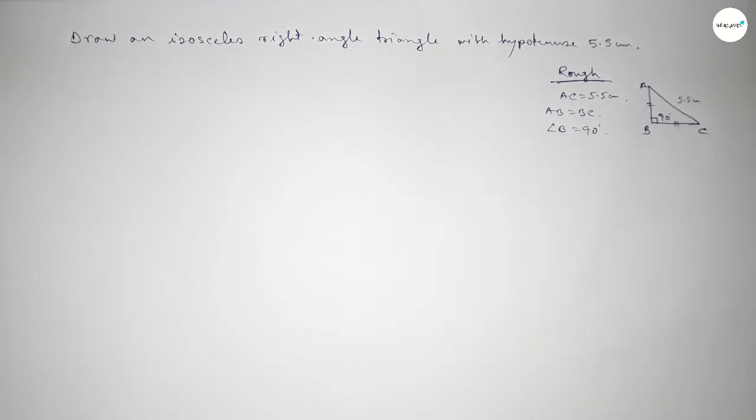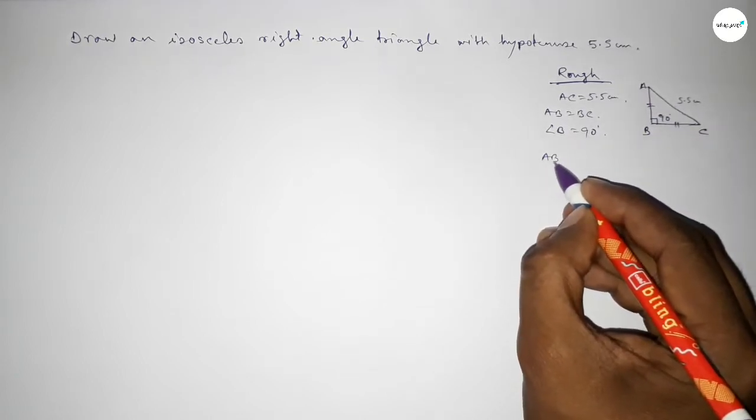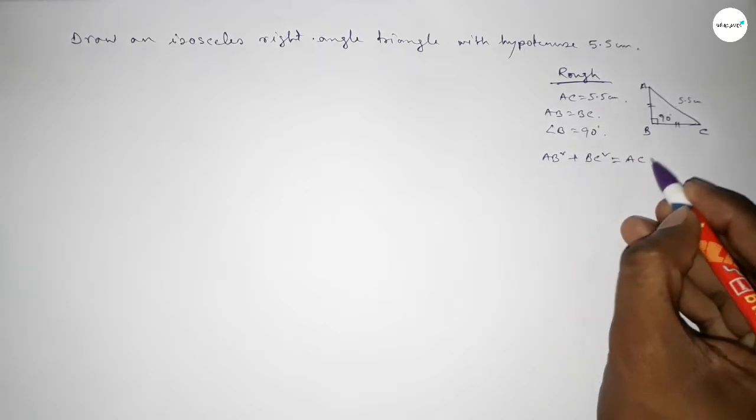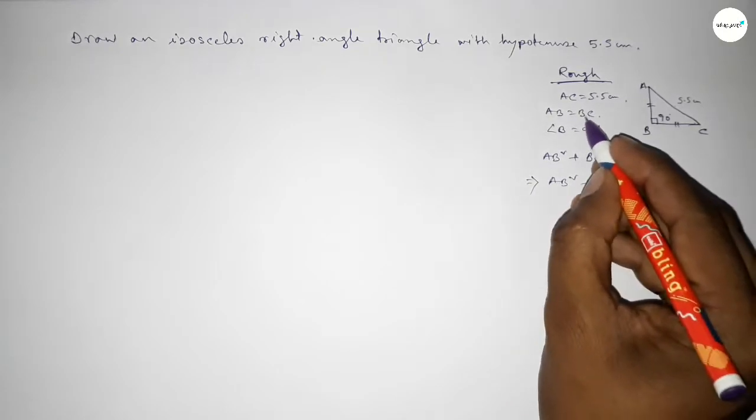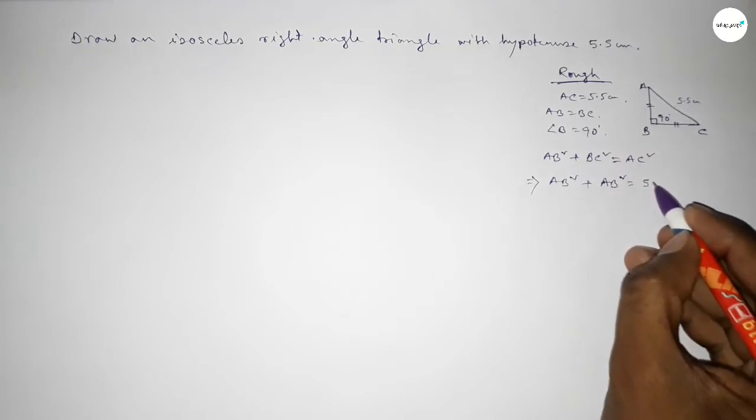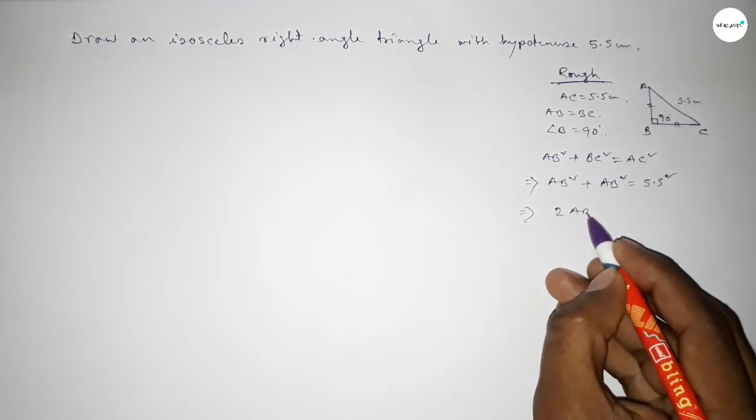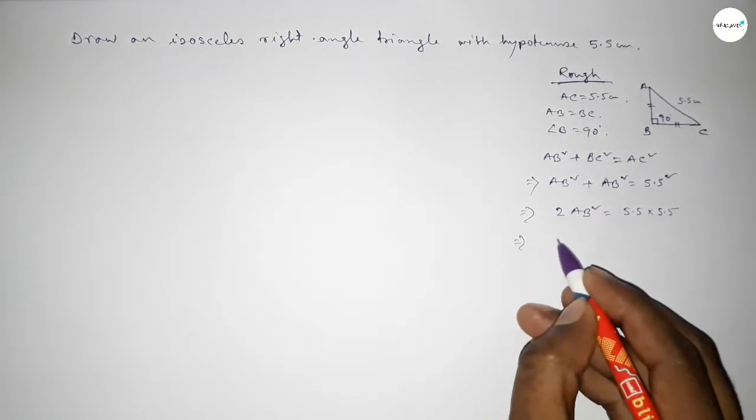Then by Pythagorean theorem: AB² plus BC² equal to hypotenuse squared. So AB² plus BC² equal to AC². Since AB equals BC, this becomes AB² plus AB² equal to 5.5². Therefore, 2AB² equal to 5.5 into 5.5.